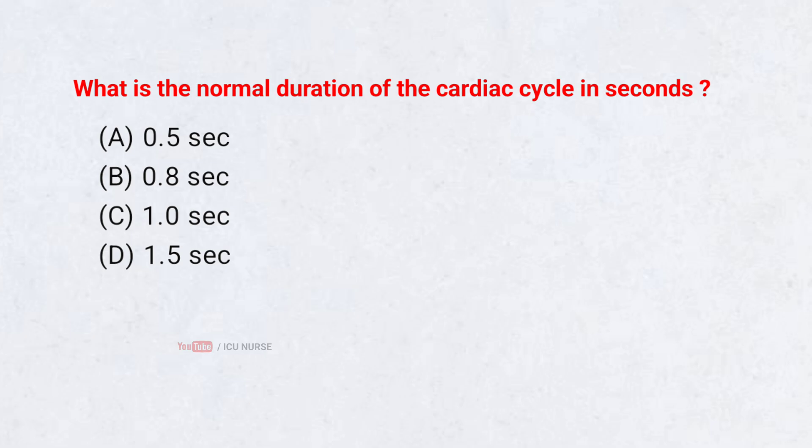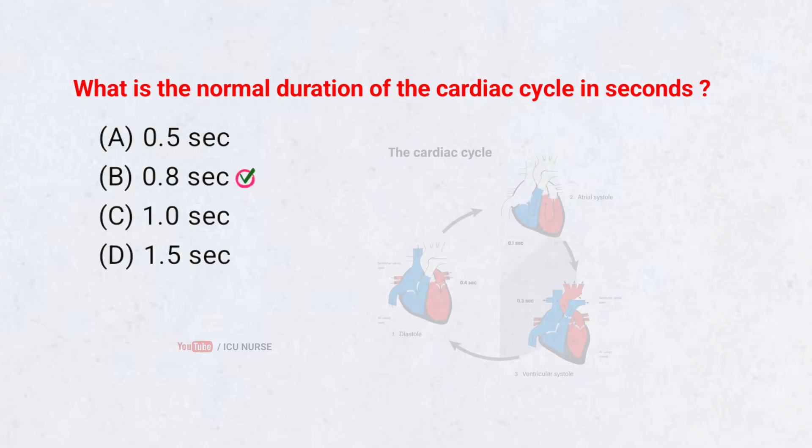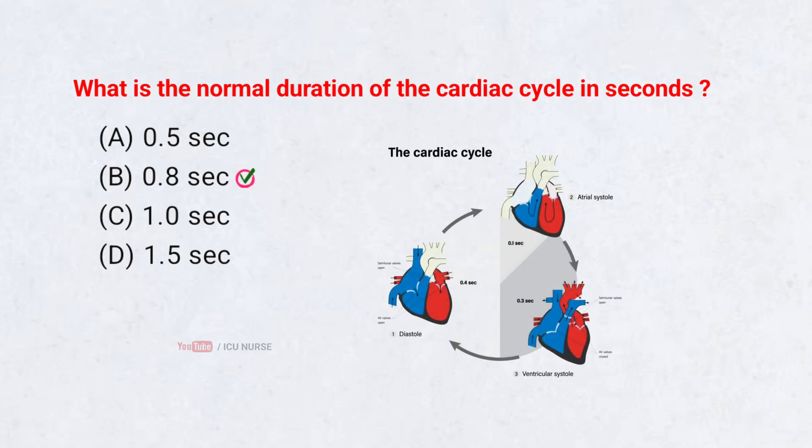What is the normal duration of the cardiac cycle in seconds? Correct answer B: 0.8 seconds. The normal cardiac cycle takes about 0.8 seconds, based on a typical resting heart rate of 75 beats per minute.